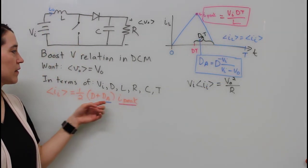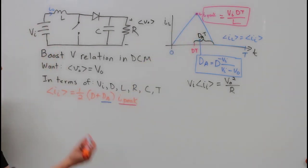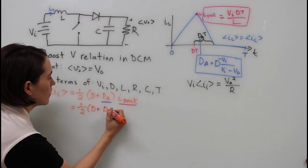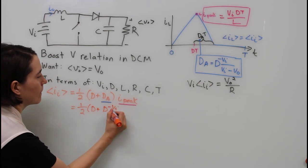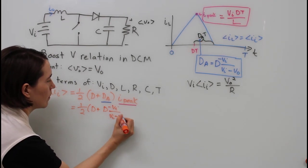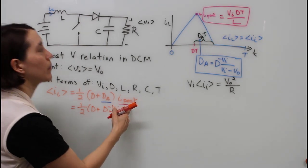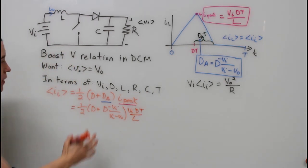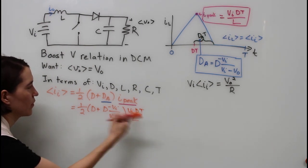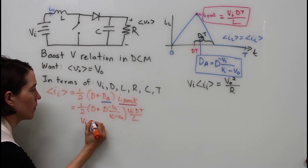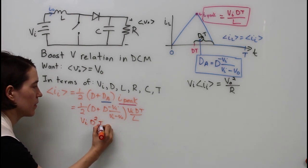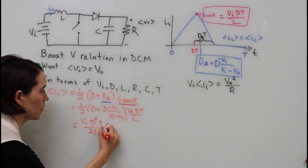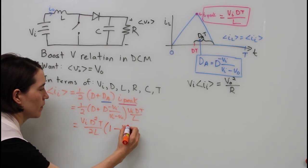Now we can replace Da with this value and I peak with this value. Let's substitute those in. We can write in the Da value here and for I peak we can write in this expression. Now we simplify. Let's move that term over to the front and take the D out, so we're squaring the D there. Now we have what's in the parentheses and the negative is coming from the negative V in.